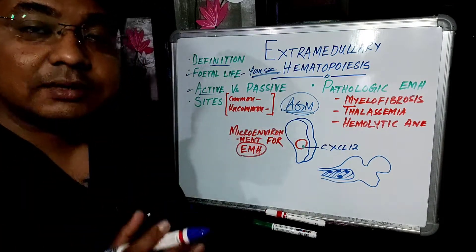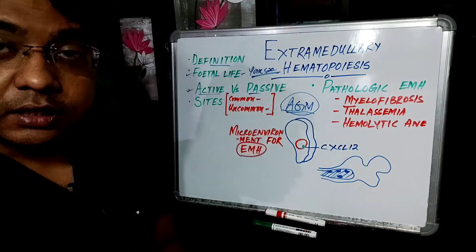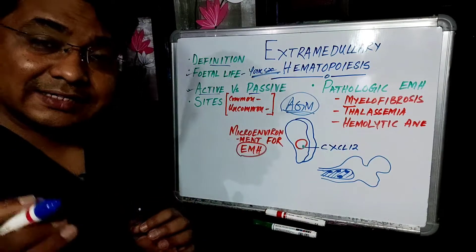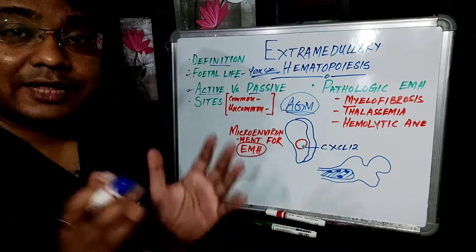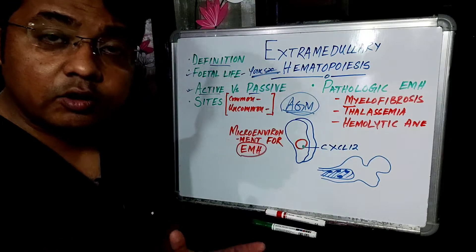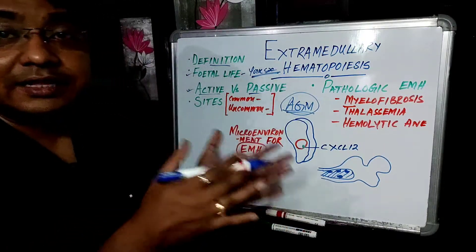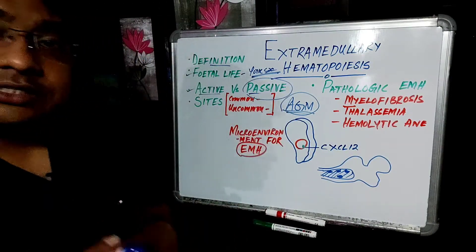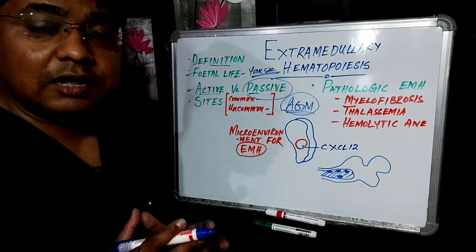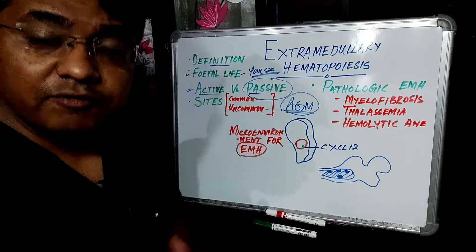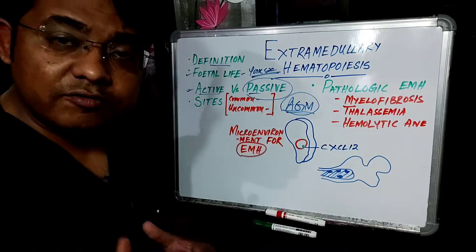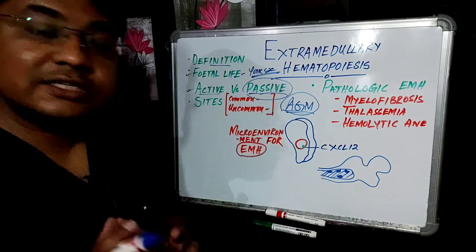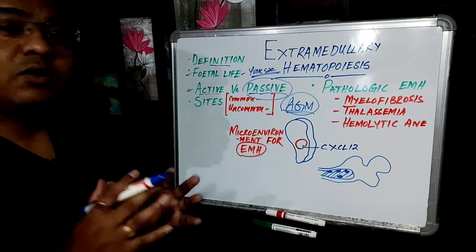There are two types of extramedullary hematopoiesis. The first is active extramedullary hematopoiesis, and the second is the passive form. The active form is present in fetal life — that is, the production of blood elements from the liver and the spleen. Passive hematopoiesis occurs in adult life when there is some difficulty in the process of blood formation, leading to the occurrence of this passive form of extramedullary hematopoiesis.